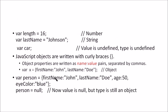Here are some examples of these data types. 'length = 16' means length is a number type variable. 'lastName = "Johnson"' means lastName is a string type variable. A variable 'char' that is declared but not assigned is of undefined type. JavaScript objects are written in the form of name-colon-value pairs, for example firstName: 'John', lastName: 'Doe'. Here 'person' is an object. The null data type is used for assigning the person object a null value.